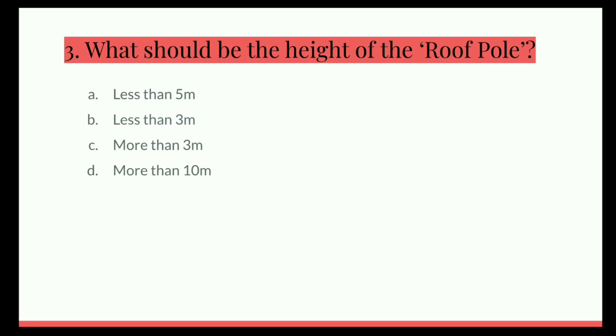Next question. What should be the height of the roof pole? Option A, less than 5 meter. B, less than 3 meter. C, more than 3 meter. D, more than 10 meter. And the correct answer is less than 3 meter.